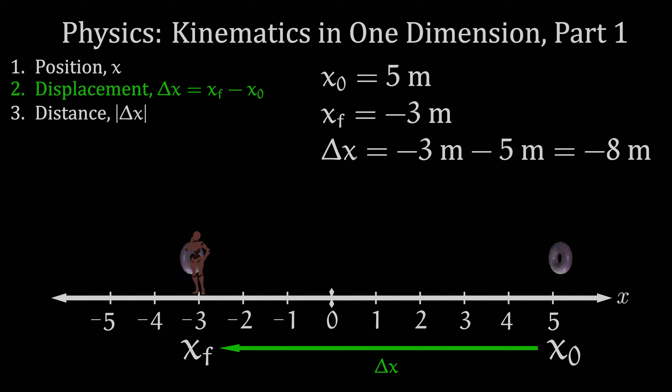Thus, my displacement going from the first donut to the second is delta x equals negative three meters minus five meters, which is equal to negative eight meters. A displacement can therefore be positive or negative, and the sign of the displacement tells us which direction we've traveled along our number line, either positive to the right or negative to the left.